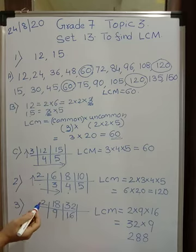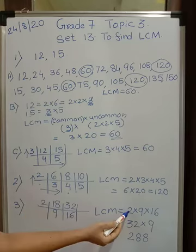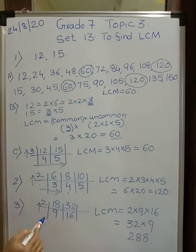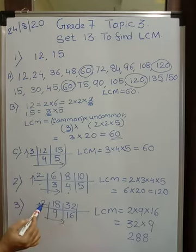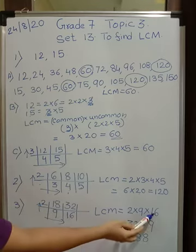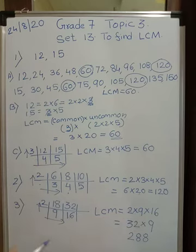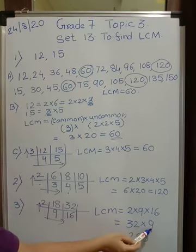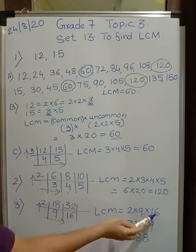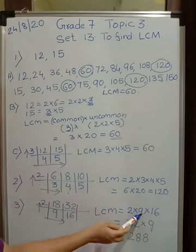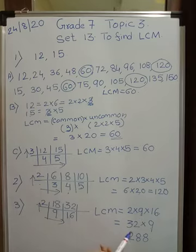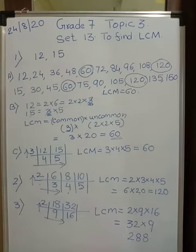The LCM is 2 multiplied by the remaining numbers 9 and 16: 2 × 9 × 16. I find it easiest to do 2 × 16 = 32 first, then multiply by 9. Alternatively, 2 × 9 = 18, then 18 × 16. Either way: 32 × 9 = 288. The LCM of 18 and 32 is 288. I hope the method is clear.